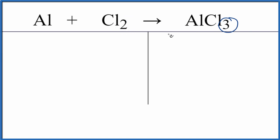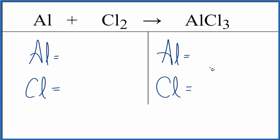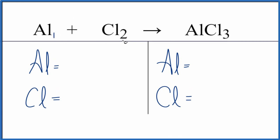First, I'm going to write out the atoms on each side and then count the atoms up. One aluminum, two chlorines, and one aluminum, three chlorines. So how to deal with the odd number here?